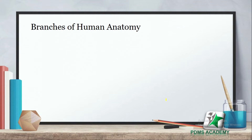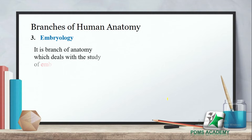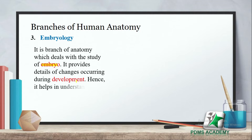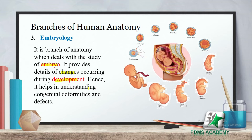The next branch is embryology. It is a branch of anatomy which deals with the study of the embryo. It provides details of changes occurring during development and helps in understanding congenital deformities and defects. In embryology, when an egg is fertilized by sperm, we get a zygote.